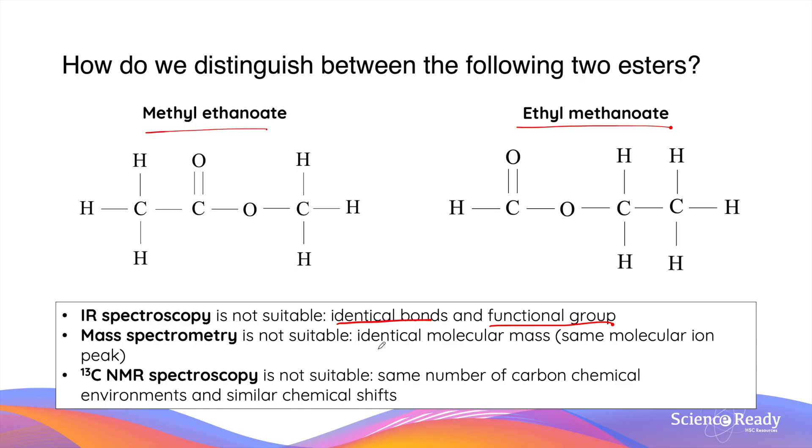Similarly, mass spectrometry is not suitable as these two compounds have identical molecular mass and therefore produce the same molecular ion peak. Using carbon-13 NMR, we will produce two spectra with the same number of carbon signals. As in both molecules, there are a total of three carbon environments. In addition, the chemical shift of the signals that we will see in a carbon-13 NMR will be very similar in these two molecules as the environment for each carbon atom are more or less similar.